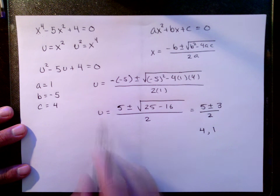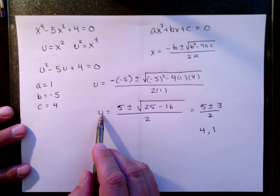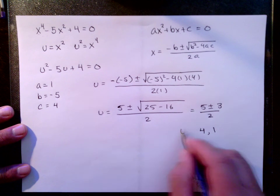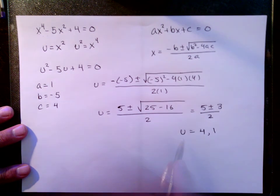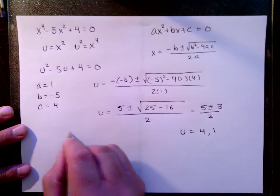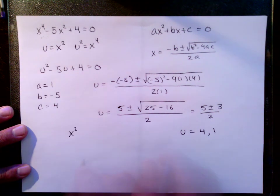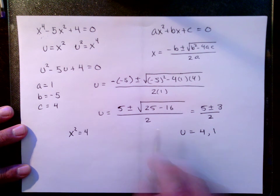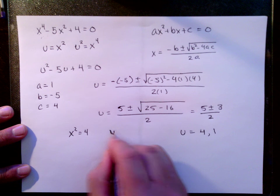These are solutions for the value for u. So now we know that u equals 4 and 1. But we want to provide values for x that make the original equation true. So we have to substitute x squared back in for u. Now u equals 4 becomes x squared equals 4, and u equals 1 becomes x squared equals 1.